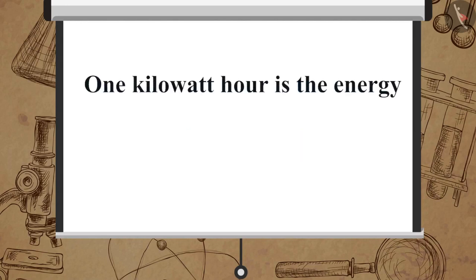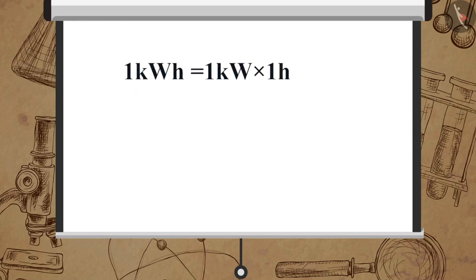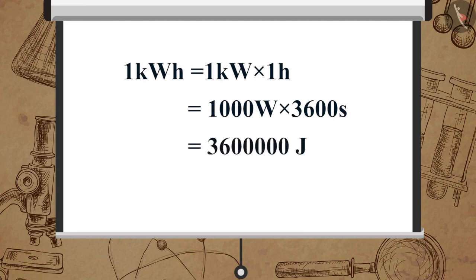One kilowatt hour is the energy consumed in one hour at the rate of one thousand joules per second. 1 kWh = 1 kW × 1 hour = 1000 watts × 3600 seconds = 3,600,000 joules = 3.6 × 10^6 joules.